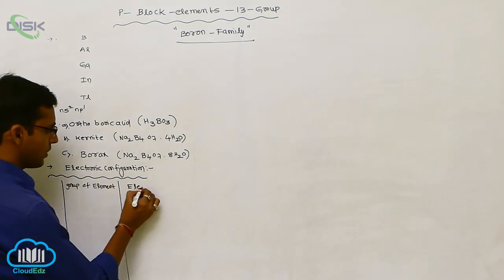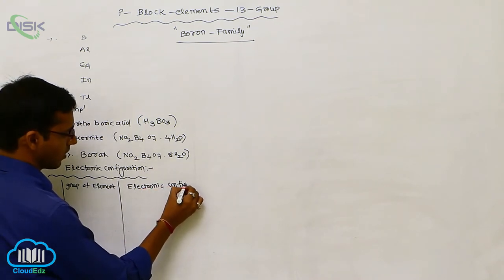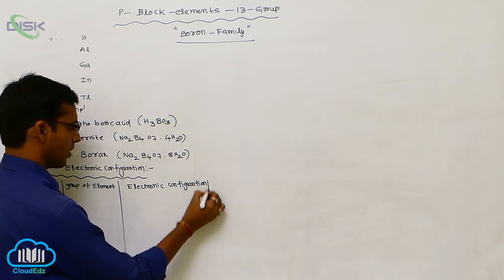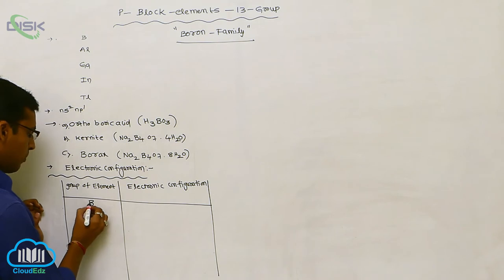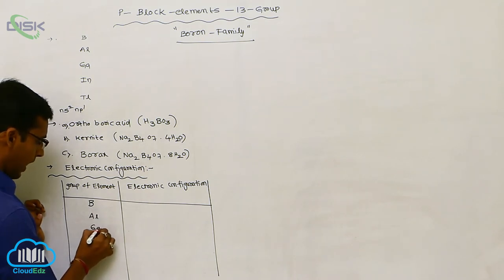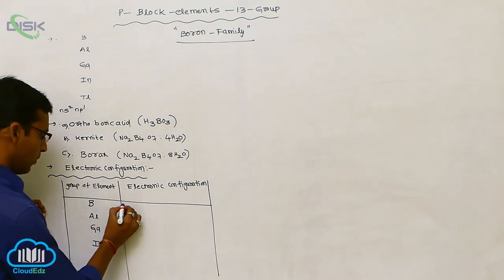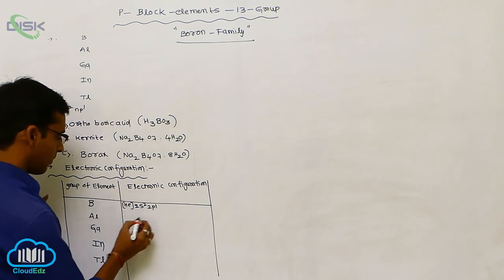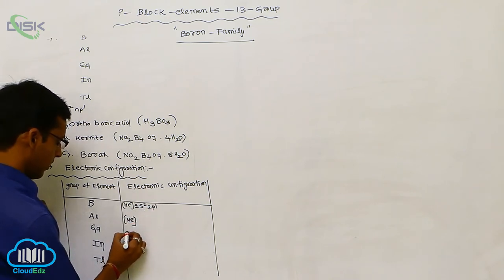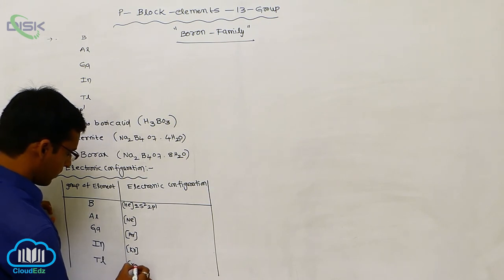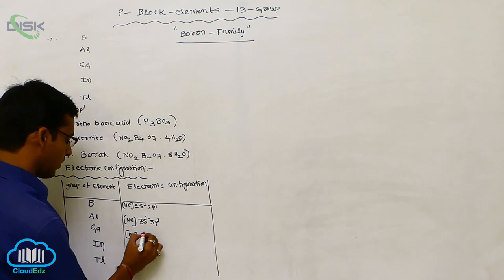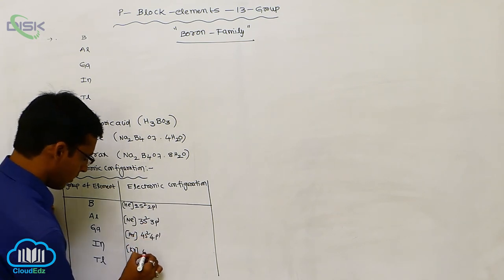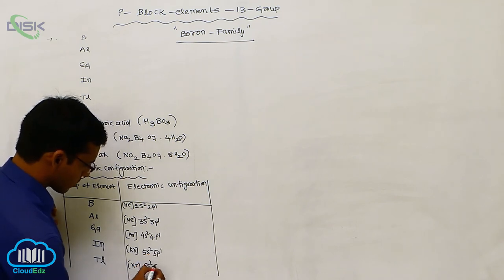What are the group elements? Boron follows helium inert gas with configuration 2S2, 2P1. Aluminum follows neon with 3S2, 3P1. Gallium follows argon with 4S2, 4P1. Indium follows krypton with 5S2, 5P1. Thallium follows xenon with 6S2, 6P1.